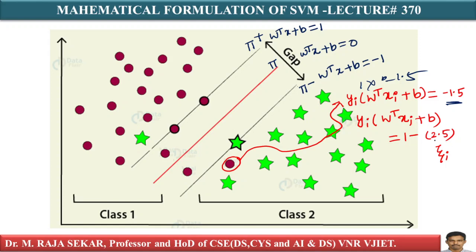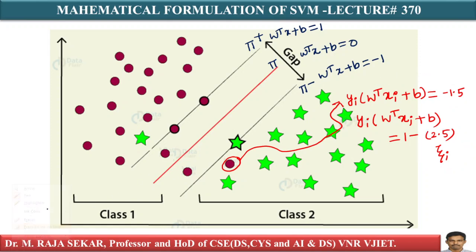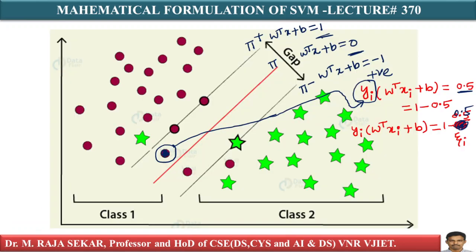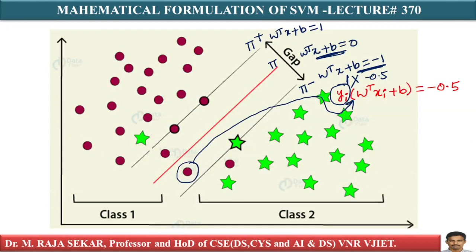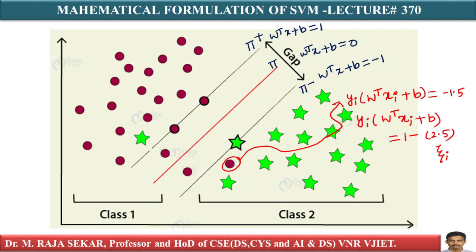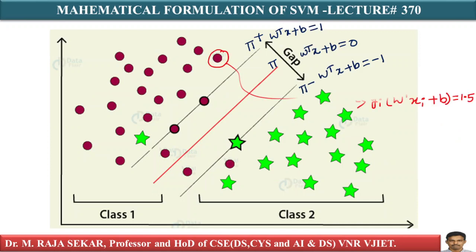Let me say this is ξi — this 2.5 is a parameter ξ. ξ is a special symbol that we use. For the other points also, we wrote like that: here ξ equals 0.5; here ξ equals 1.5 for this particular point; and for this particular point, ξ equals 2.5, written as 1 minus 2.5.